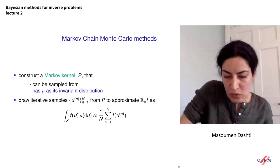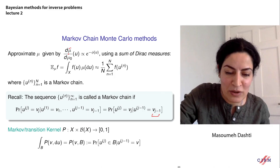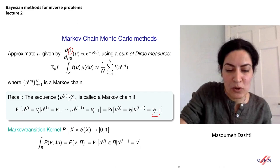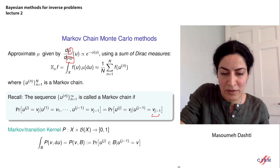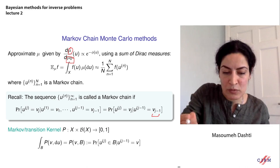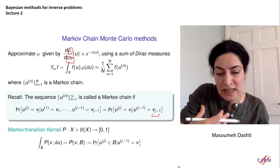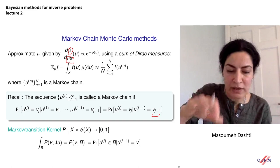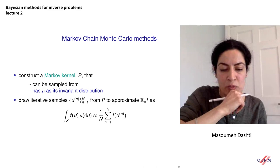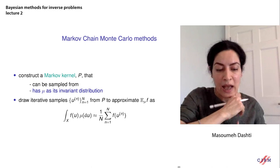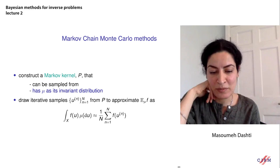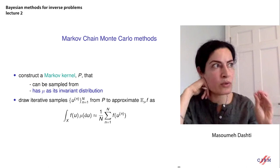The idea of MCMC methods is to construct a Markov kernel that is easy to sample from and has mu as its invariant distribution. We cannot just sample from mu directly — mu-naught, when Gaussian, is known and easier to sample from. So we construct a kernel p that is easy to sample from and has mu as its invariant distribution. This means: if the j-th sample is distributed according to mu, then the next sample will also be distributed according to mu.